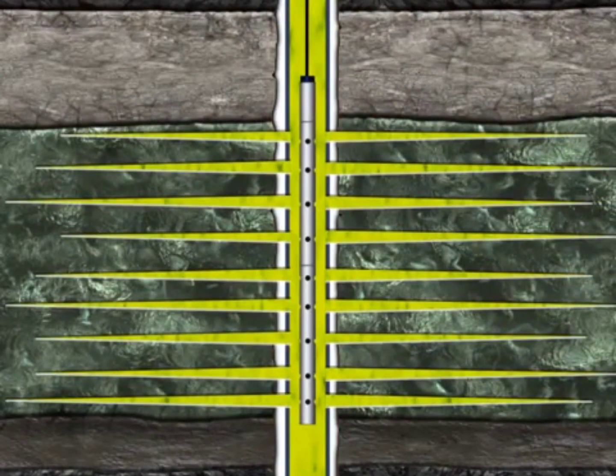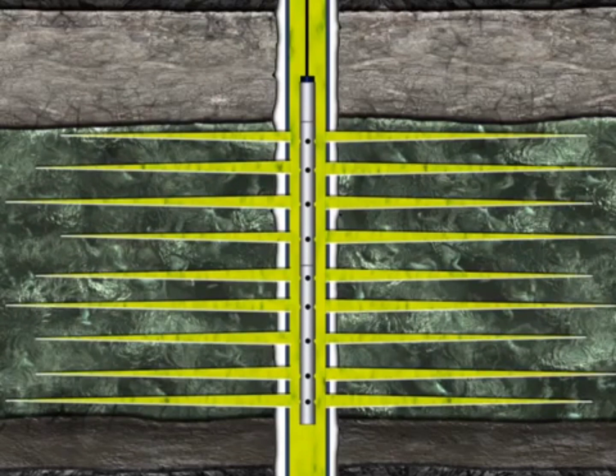The charges in the gun explode, providing a path through the formation, the cement, and the casing to the production tubing. The perforating gun is then pulled out of the hole.